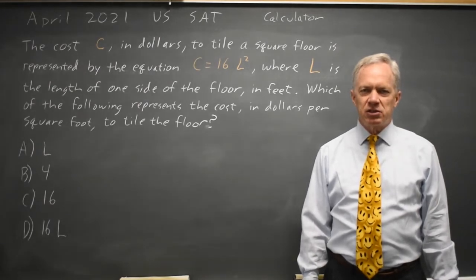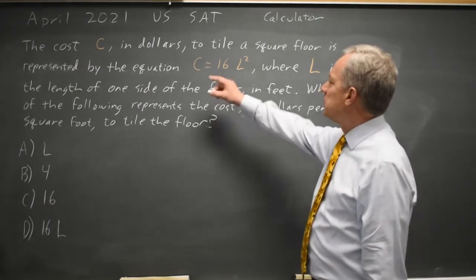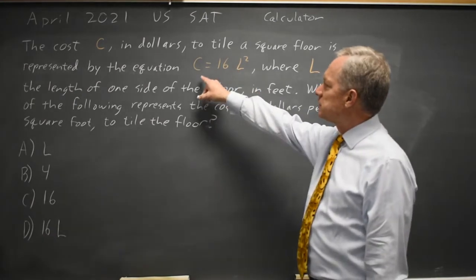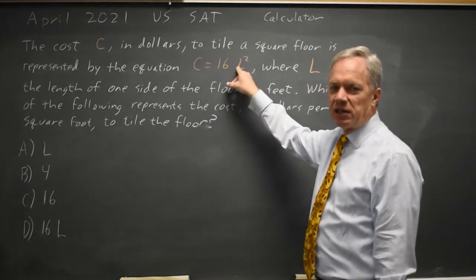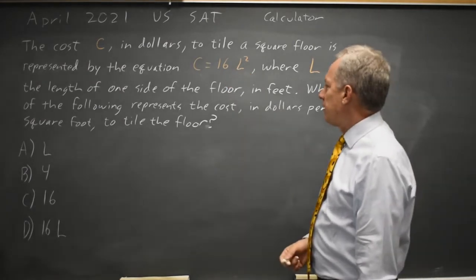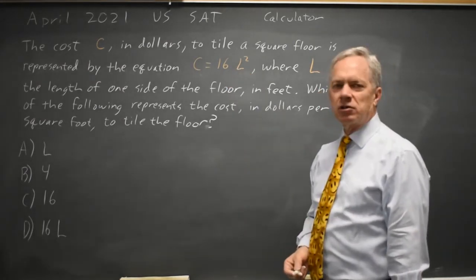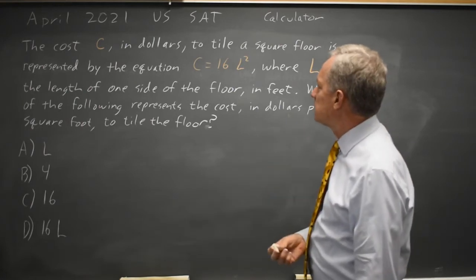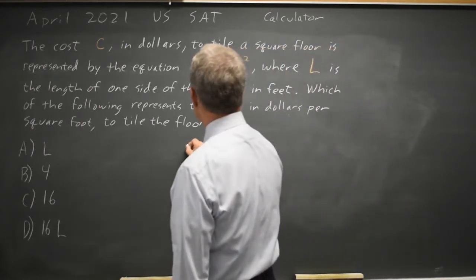College Board is asking us to interpret an equation C equals 16L squared, where C is the cost in dollars and L is the length of each side of a square in feet, and find the expression that corresponds to dollars per square foot. So C is dollars,